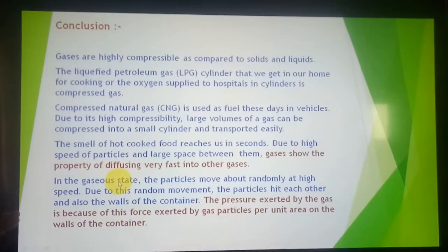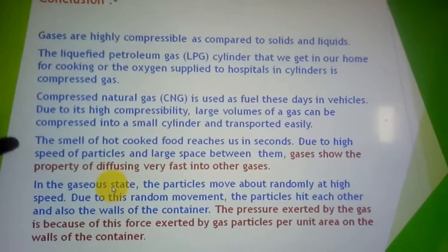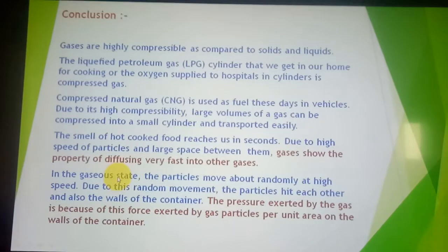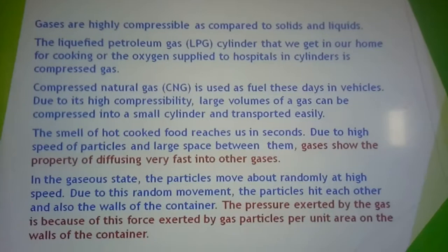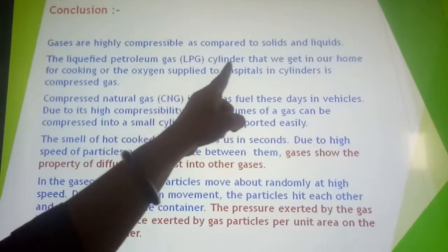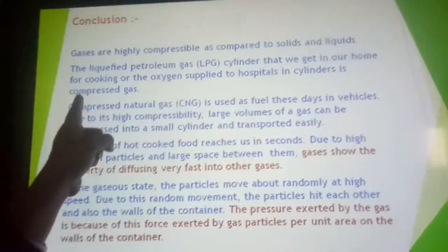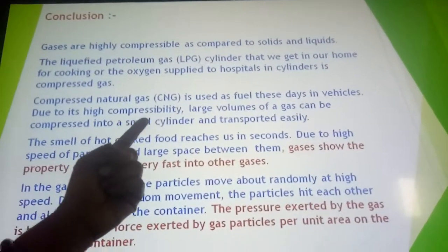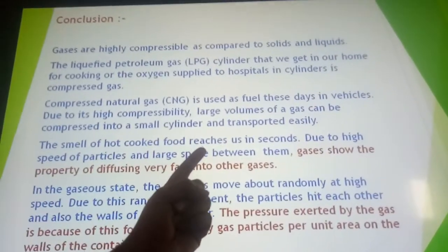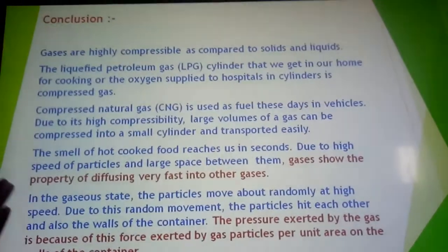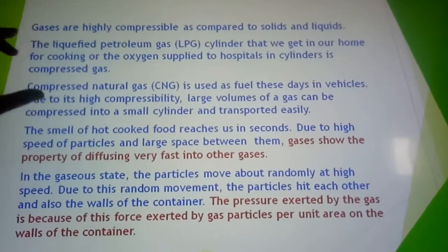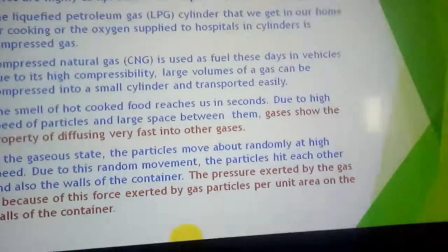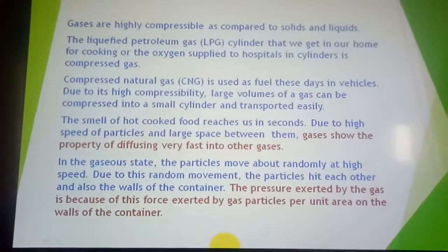Based on this activity, here are the conclusions. The LPG cylinder we use at home for cooking and the oxygen supply cylinder in hospitals contain compressed gas. Compressed natural gas used as fuel in vehicles also has very high compressibility — a large volume of gas is compressed into a small cylinder and can be transported easily. These are examples of the compressibility of the gaseous state.